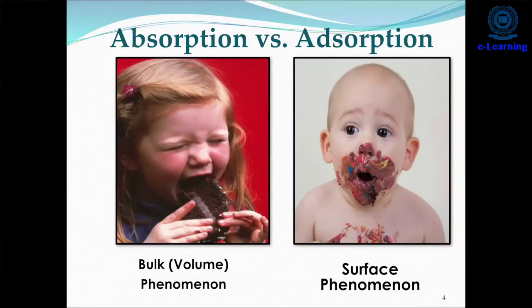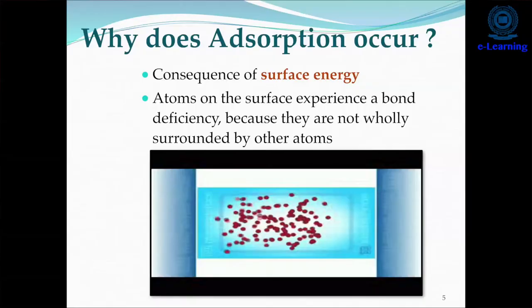Absorption is a bulk phenomena whereas adsorption is a surface phenomena. Now why does adsorption occur? It is a consequence of surface energy — atoms on the surface experience a bond deficiency because they are not wholly surrounded by other atoms.